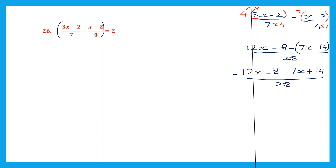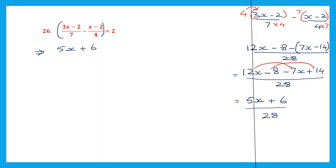Now let's work on the x. 12x minus 7x: 12 minus 7 is 5, so that is 5x. Let's work on the numbers. Minus 8 plus 14: signs are different, put the sign of the bigger number plus and subtract. 14 minus 8 is 6. So 5x plus 6 divided by 28 is what we have got. So 5x plus 6 divided by 28 is equal to 2.